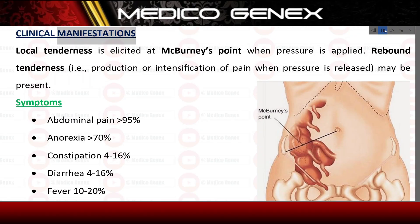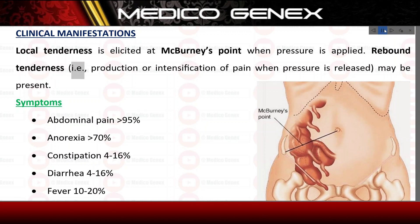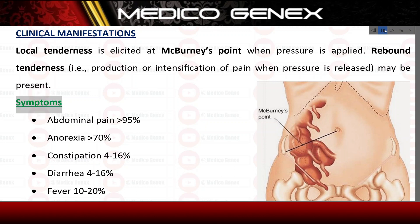Clinical manifestations. Local tenderness is elicited at McBurney's point when pressure is applied. Rebound tenderness — production or intensification of pain when pressure is released — may be present. Symptoms: abdominal pain, 95%.